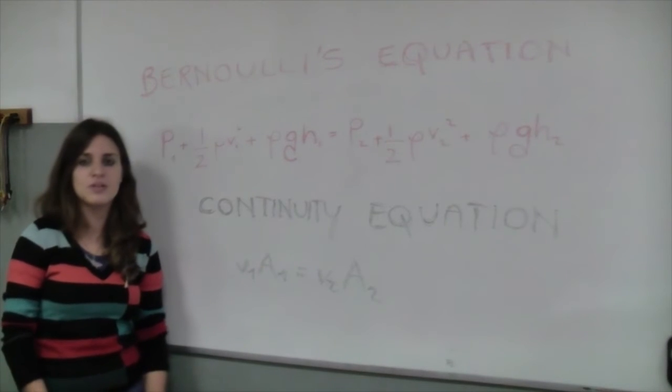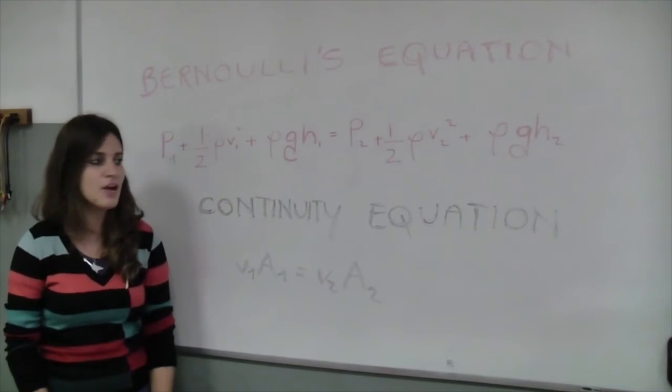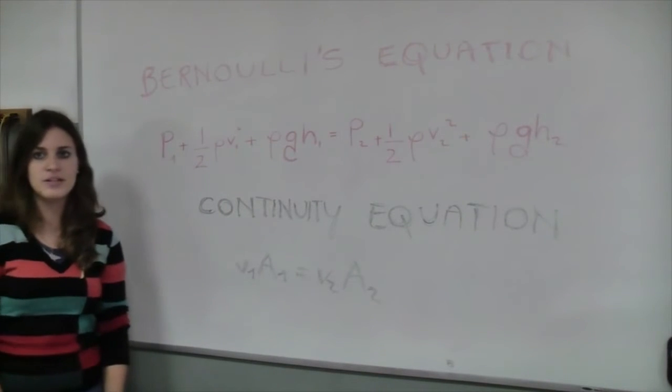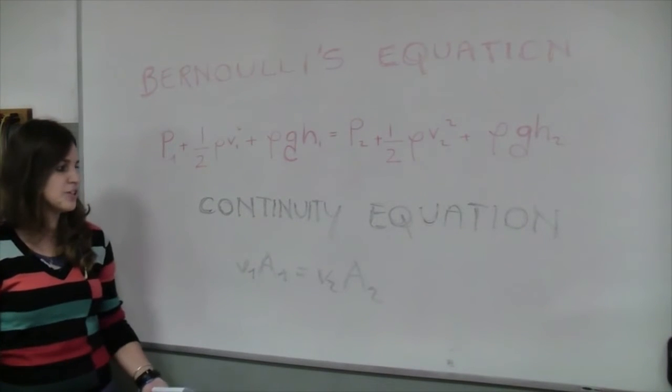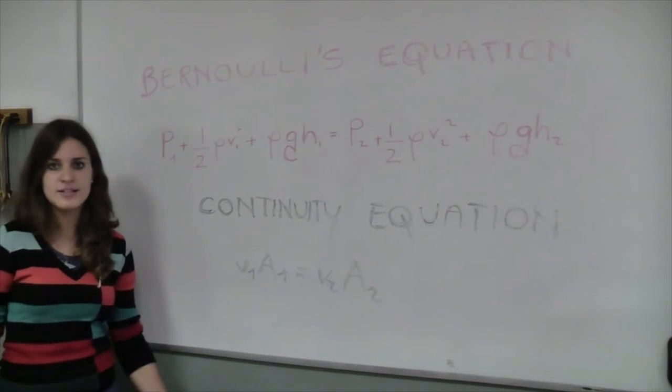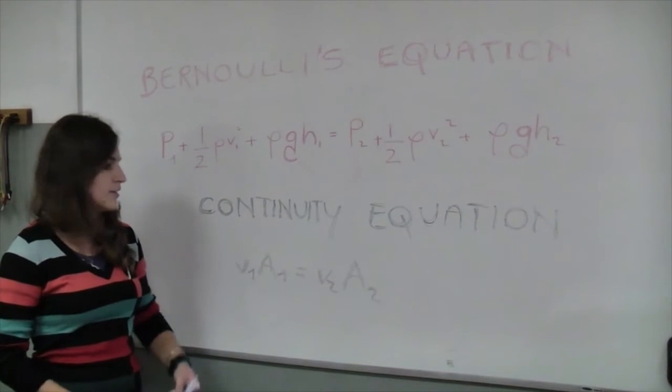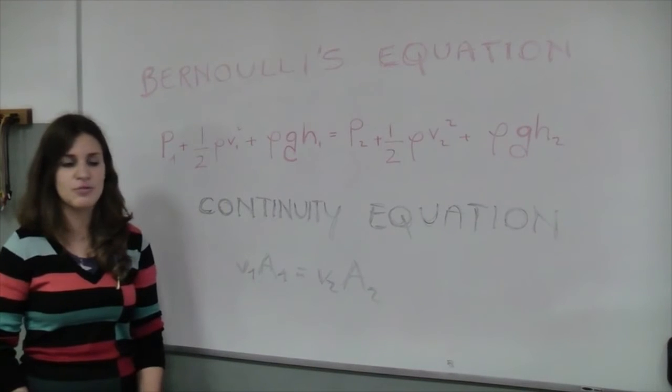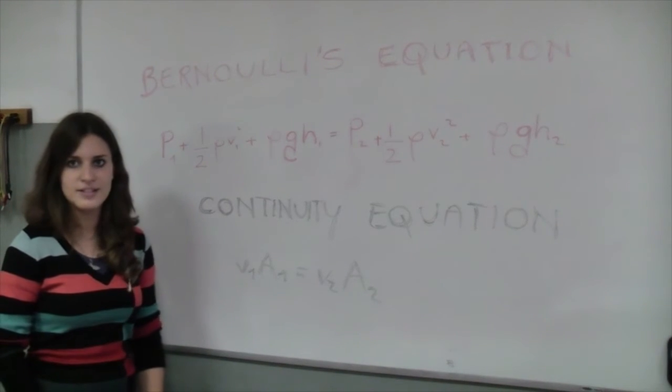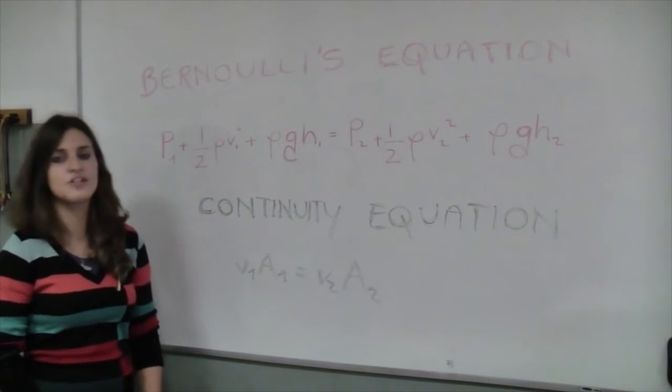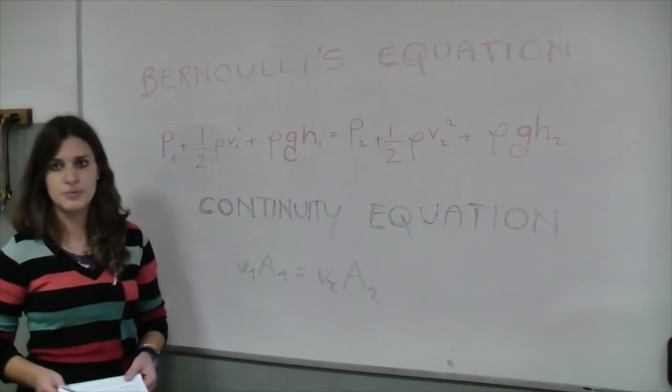From the conservation of mass, we can deduce the continuity equation, according to which, if the fluid's density does not change, the product between the fluid's speed and the section through which the fluid flows is constant. From the conservation of energy, we can deduce a very simple equation.